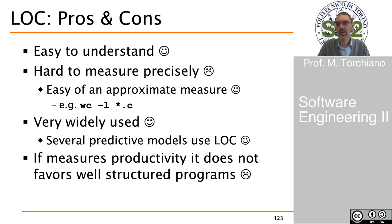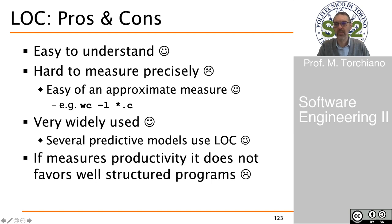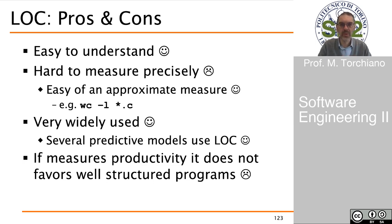In general, lines of code are very easy to understand. It is quite complex to get a very precise measure because we have to carefully select different aspects, but it is quite easy to get an approximate measure — for instance, using the word count utility on all source files. It is very widely used. The problem is that we have to be careful when measuring programmer productivity in terms of lines of code, because programmers might alter their behavior just to produce more lines of code than actually needed.